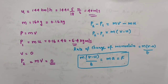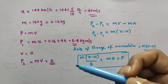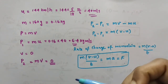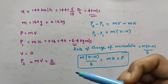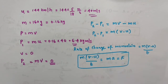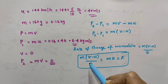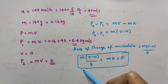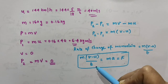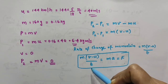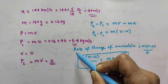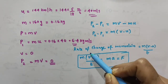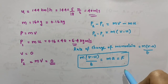In a high jump athletic event, the athletes are made to fall on a cushioned bed or a sand bed. This is to increase the time of the athlete's fall to stop after making a jump. When time increases, that decreases the rate of change of momentum and hence the force, preventing injury.